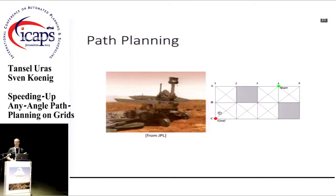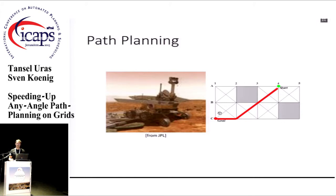The simplest way to approach this is to construct a grid out of the environment with blocked and unblocked cells, construct a graph out of this grid, and search it to find the shortest path. The problem with this approach is that the grid path is longer than a shortest path on the continuous environment, and it has turns in free space.